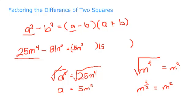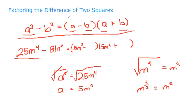So we have 5m squared here and 5m squared here. Now we substitute and find the value of b. We already have the value of a as 5m squared. Now let's find b.